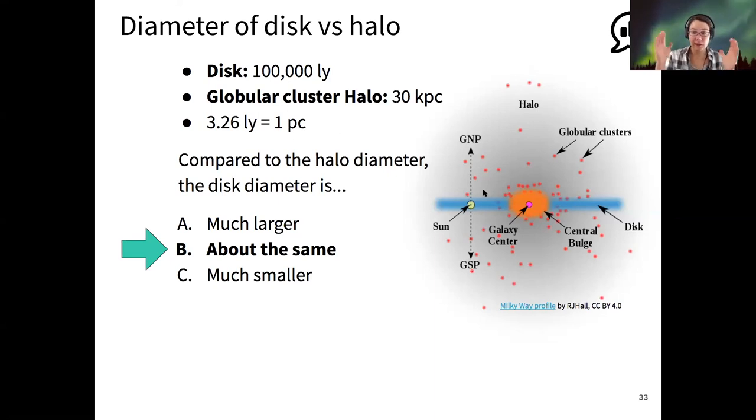So the disk and the halo are about the same size. This is what we would call most of the visible matter of the Milky Way is located in those locations. Most of the bright stars, most of the gas and dust is restricted to the disk. The halo has some of those old dim stars and globular clusters.